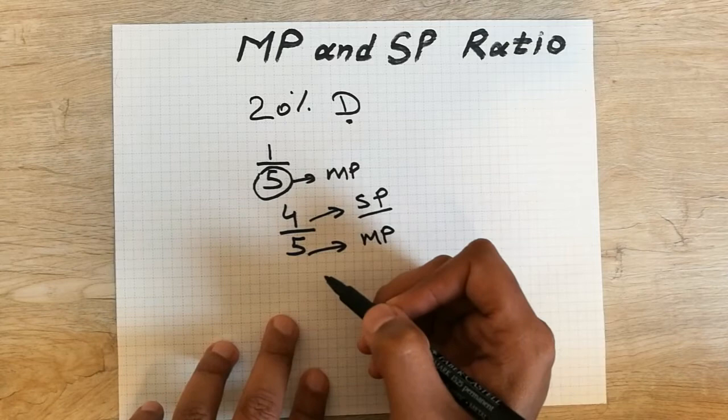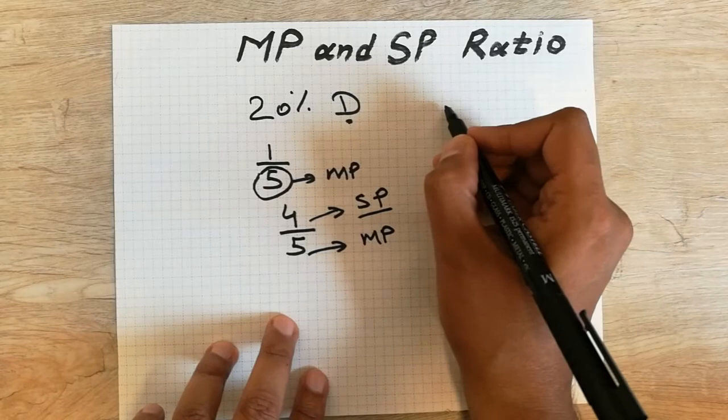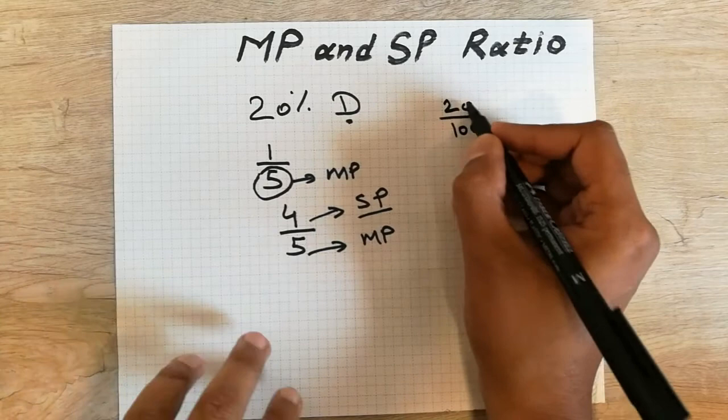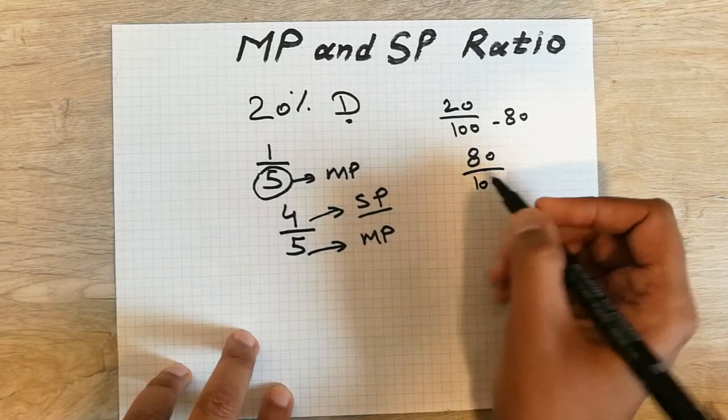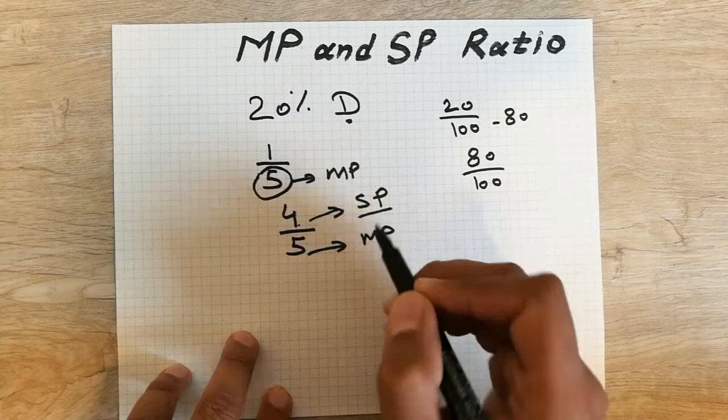You can verify this the other way too: 100 − 20 = 80, and dividing gives 4/5, which is the same ratio — selling price 4, mark price 5. Let's move to one more example to find the mark price and selling price ratio. Let's say there is a 40% discount.